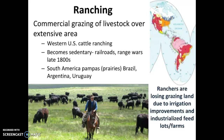That land doesn't need to be incredibly fertile soil because you just need grasses to grow on it, so it doesn't have to be prime agricultural land, which would cost more. Ranchers are losing grazing land due to irrigation improvements, which means that previously poor soil can be converted into better soil, and people may see they can make more money off wheat or corn farming. The price of that land goes up and it's no longer feasible for grazing animals.